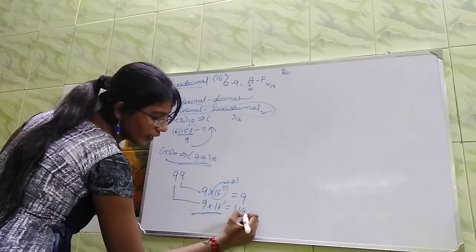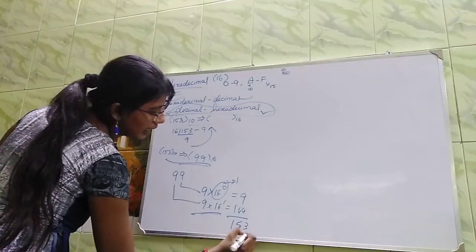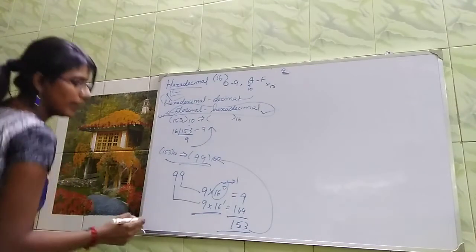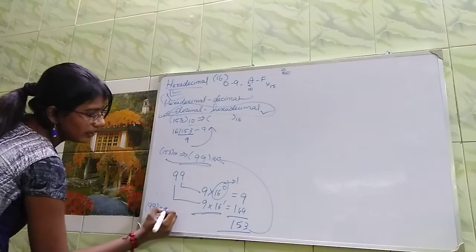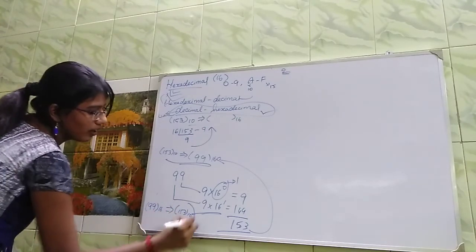9 into 16 is 144, and your answer will be 153. OK, is the answer correct? The answer is correct. 99 of 16 is 153 of 10.